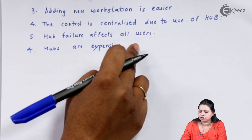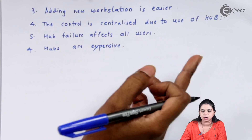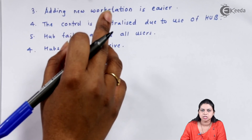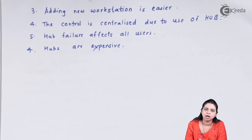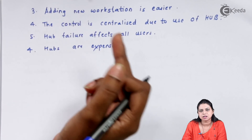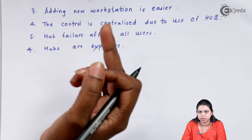Hub failure affects all users. The disadvantage in star topology is that if the hub fails, it will affect all the users. Also, hubs are slightly expensive.